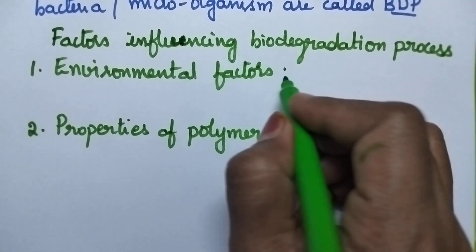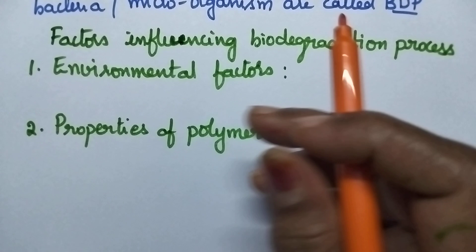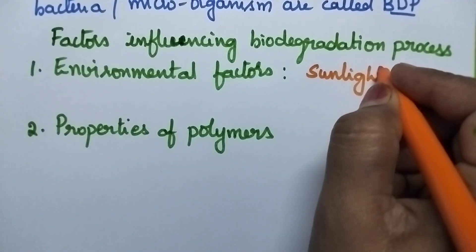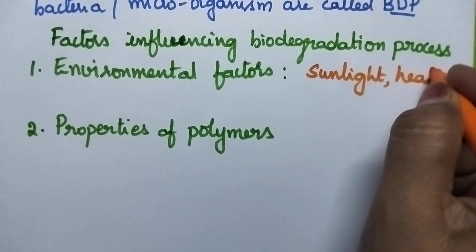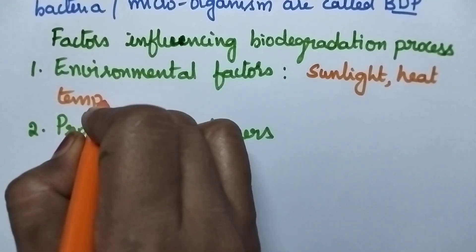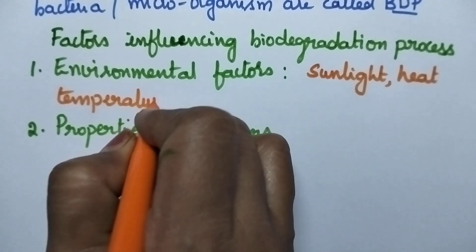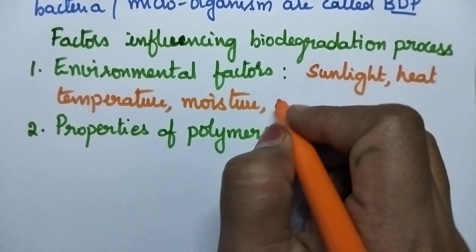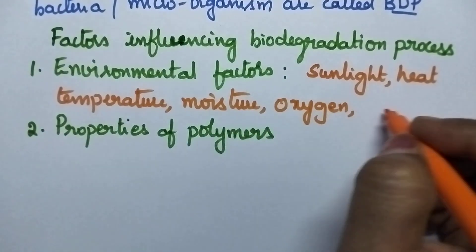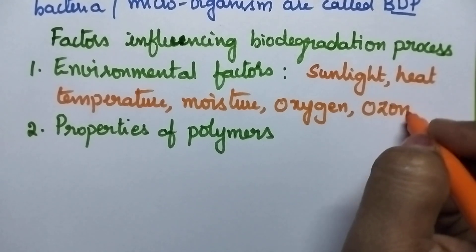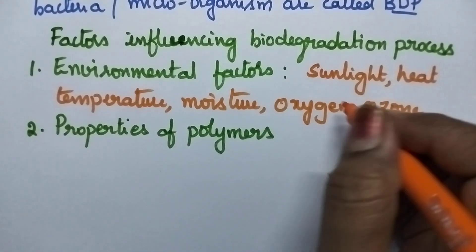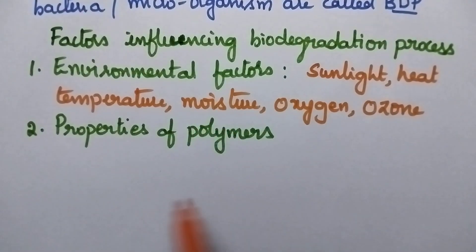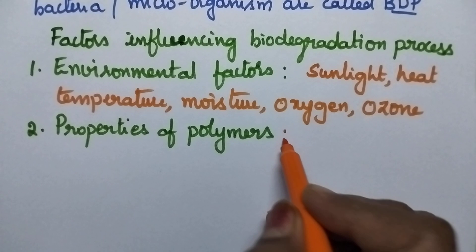Environmental factors generally include sunlight, heat, temperature, moisture, concentration of oxygen, ozone, and it also depends upon the nature of the bacteria and microorganism.